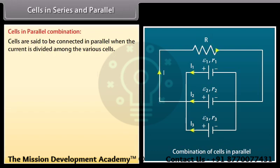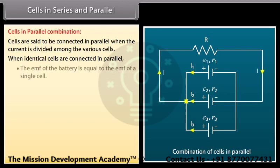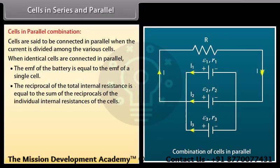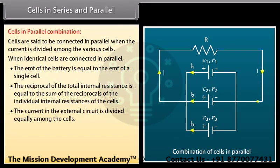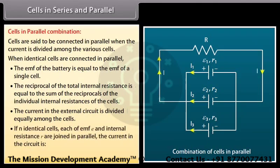In parallel combination, all positive terminals are connected together and all negative terminals are connected together. The EMF of the battery equals the EMF of a single cell. The reciprocal of the total internal resistance equals the sum of reciprocals of individual internal resistances. If N identical cells each of EMF E and internal resistance r are joined in parallel, the current in the circuit equals NE divided by (Nr + R).